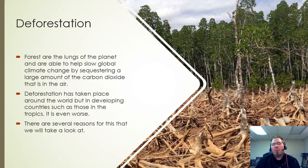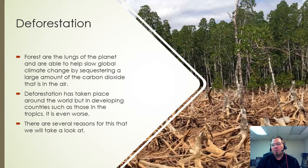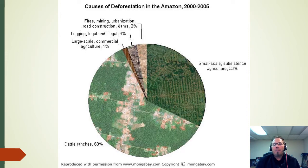Deforestation is taking place all around the world, but especially in the tropics — Brazil especially is doing it a ton. Looking at this map showing the breakdown of why deforestation in the Amazon is taking place from 2000 to 2005, the reasons are still the same today. Overwhelmingly, 60% of it is for cattle ranches, with only 1% for large-scale commercial agriculture.